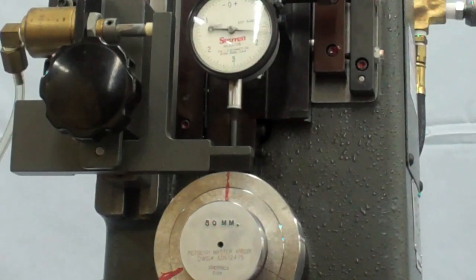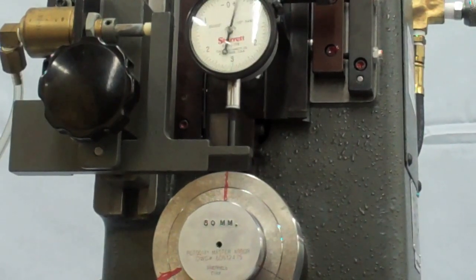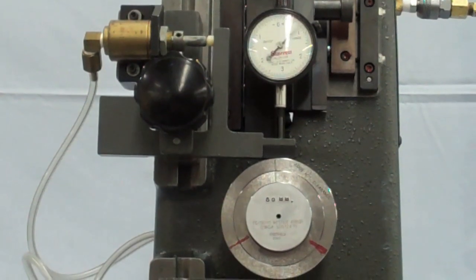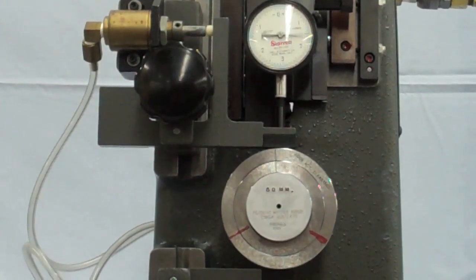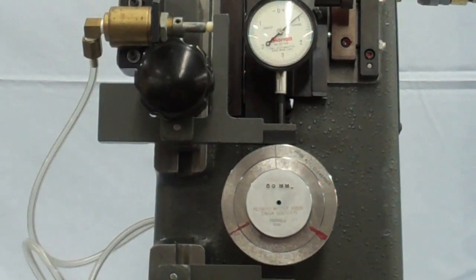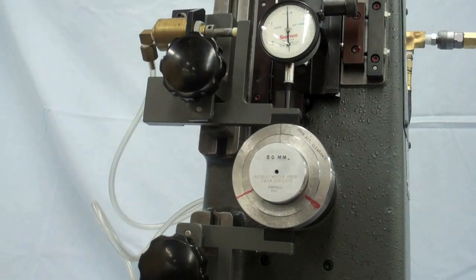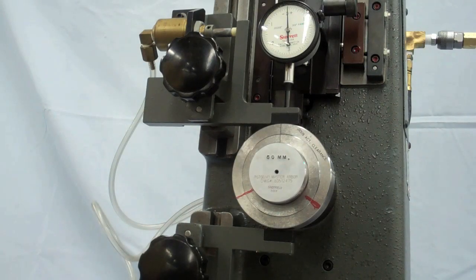The members simulate the inner and outer race of the bearings. The number marked on the outer ring of the master indicates the exact radial play in the master.